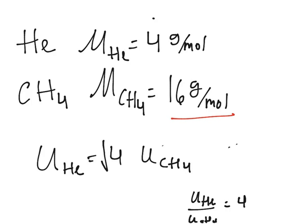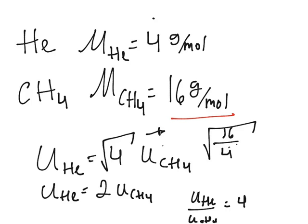So U-He would be 4 U-CH4. And there's a square root here. I forgot to put it. So we get 2 U-CH4. There's a square root here because it was the molar mass divided. And there was a square root here. So we get 2.